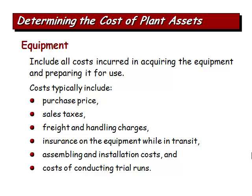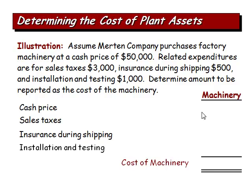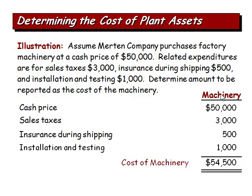Equipment includes all costs incurred in acquiring the equipment and preparing it for use: purchase price, sales tax, freight and handling charges, insurance while in transit, cost to assemble and install it, and any trial runs or testing. For example, Merton Company purchased factory machinery at a cash price of $50,000, with related expenditures of sales tax $3,000, insurance during shipping $500, and installing and testing $1,000 — giving a total cost of machinery of $54,500.